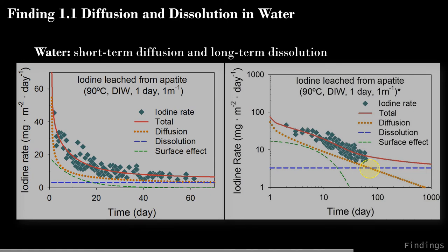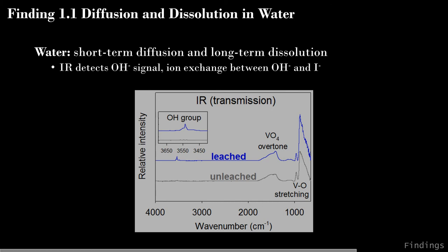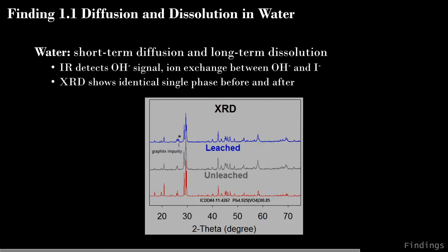On a log scale, after approximately 100 days the diffusion rate becomes lower than the constant dissolution rate, confirming that long-term iodine release is controlled by dissolution. Infrared spectroscopy detected hydroxyl groups on the leached surface, suggesting ion exchange between OH groups from water and iodide. XRD shows the same phases for the water-leached and pristine samples, with no secondary phases detected.